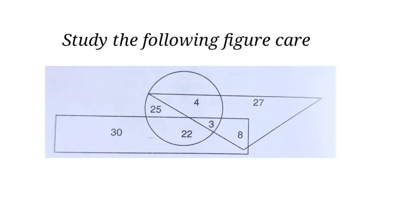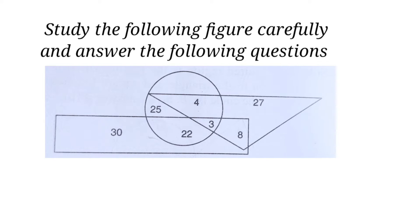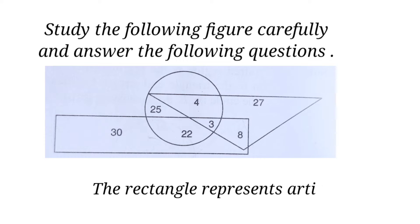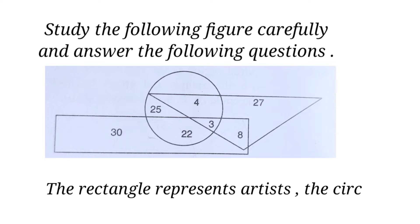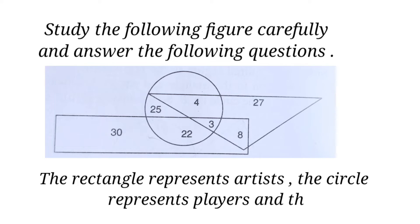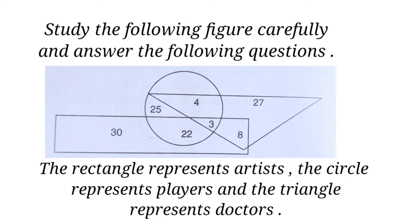Study the following figure carefully and answer the following questions. The rectangle represents artists, the circle represents players, and the triangle represents doctors.